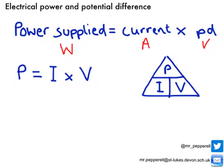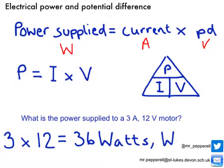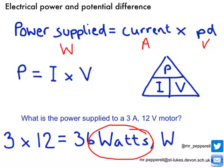Let's try a quick example. What is the power supplied to a 3 amp, 12 volt motor? I'm working out the power, so I cover up power in the triangle and do current multiplied by voltage. My calculation is 3 amps multiplied by 12 volts, which gives me 36 watts — watts being the unit of power.